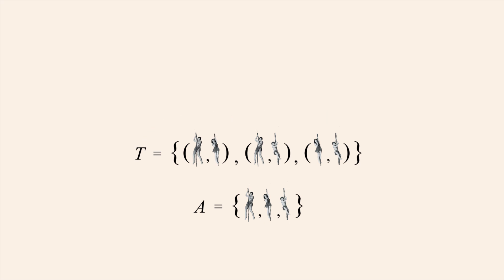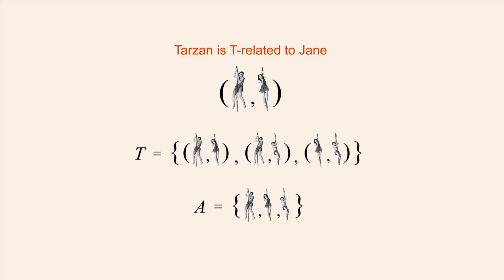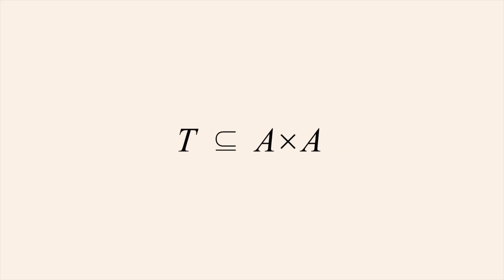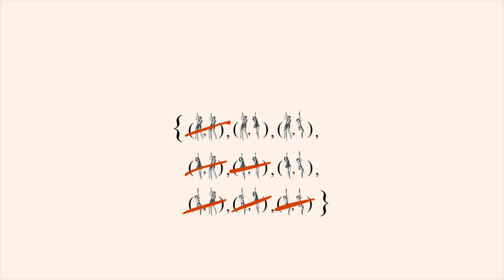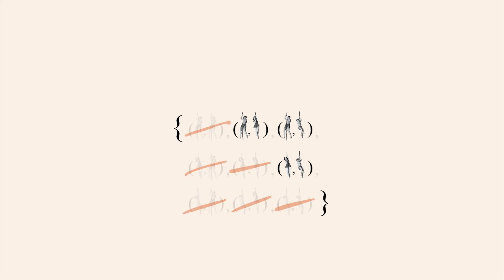Since both sets involved in this binary relation are the same set A, we call T a binary relation on set A. Each ordered pair in set T makes a statement about how one person in set A is related to a person in the same set. This ordered pair makes the statement 'Tarzan is T-related to Jane,' or in plain English, Tarzan is taller than Jane. As we saw, a binary relation from one set to another is a subset of their Cartesian product, so T is a subset of the Cartesian product of set A with itself, or A squared. A squared contains all nine possible ordered pairs which can be created from the three members of set A. If we eliminate all ordered pairs of A squared whose first element is not a person taller than the second element, we get relation T.